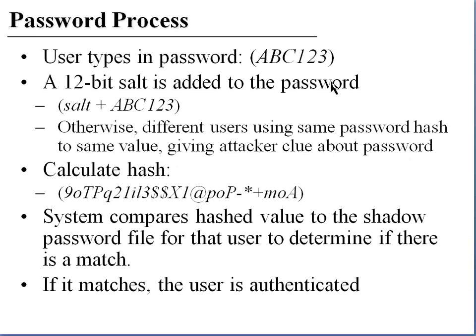To reiterate: the user types in a password — for example, ABC123 — a 12-bit salt is added to this six-character password. The reason we add the salt is that if different users have the same password, the hash would match, giving an attacker a clue about the password were they able to access the shadow file. Then the hash is calculated, and the system compares the hash value — which includes the salt and the password — to the information in the password file. If it matches, the user has authenticated.